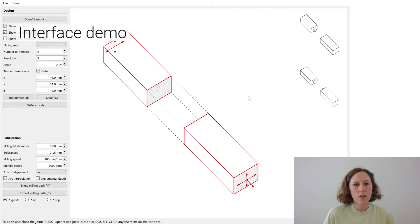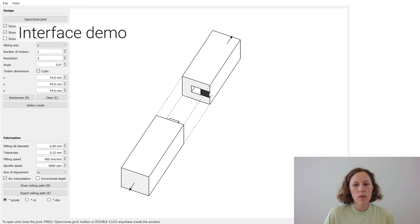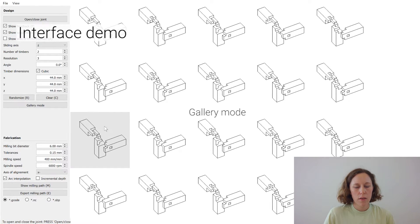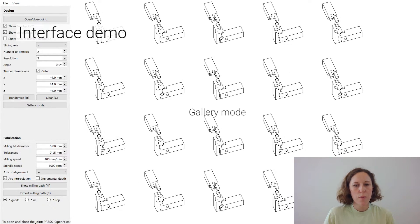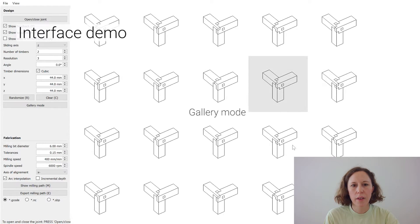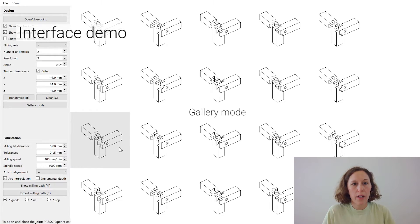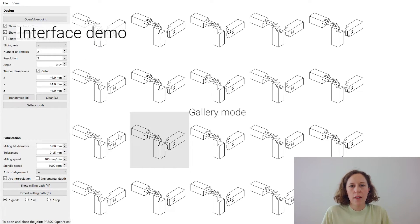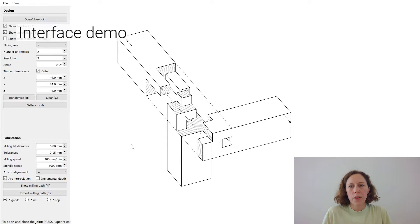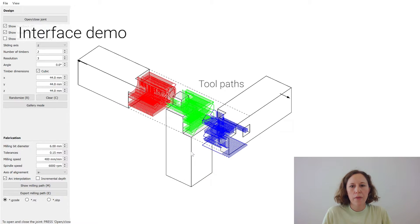In case that a joint is invalid, suggestions are shown on the right side. There's also a so-called gallery mode in which the user can browse through pre-calculated valid joints that are produced by a combinatorial search. When a design is finished, you can press a button to instantly generate toolpaths for fabrication with a three-axis CNC milling machine.